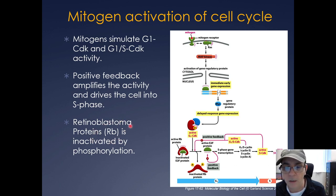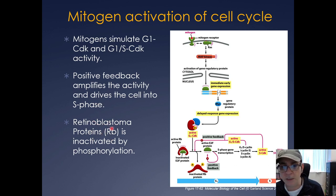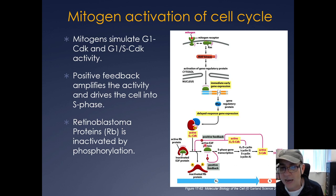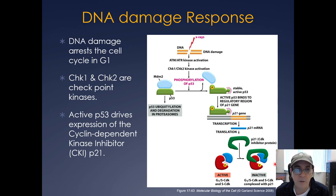Retinoblastoma protein (Rb) is often inactivated in certain eye cancers, which are devastating and often occur in children. If you are born with a mutant copy of the Rb gene, your chances of developing retinoblastoma become very high — you only need one more mutation in the good copy to produce an inactive Rb, which leaves E2F constitutively active and constantly driving cells through the cell cycle.